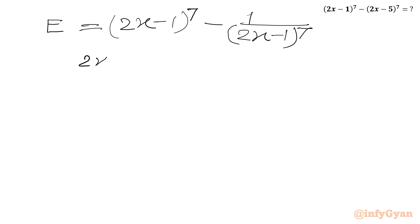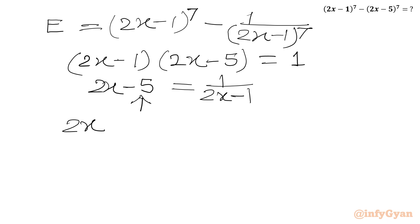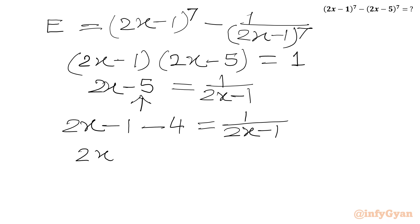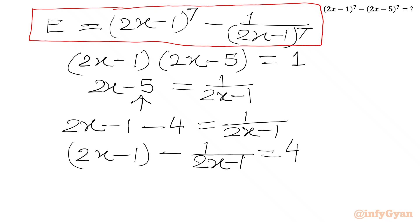From (2x − 1)(2x − 5) = 1, we have 2x − 5 = 1/(2x − 1). We can split 2x − 5 as (2x − 1) − 4 = 1/(2x − 1). After rearranging, we get (2x − 1) − 1/(2x − 1) = 4.